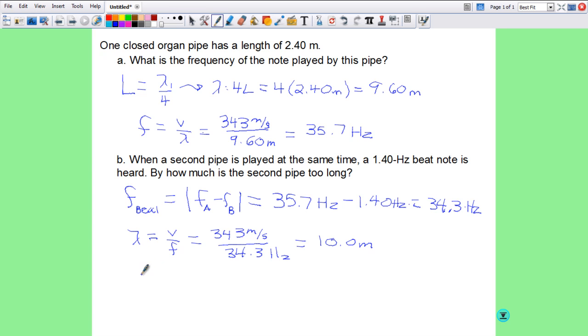So now we have to find the length of the second pipe. So using that first equation that we had up here, lambda 1 over 4. So that gives us 10.0 meters divided by 4, which will equal 2.50 meters. So this is the length of the second pipe, but the question asks how much longer is the second pipe. So quick little arithmetic, 2.50 meters minus 2.40 meters. And that gives us a whopping larger 0.10 meters.